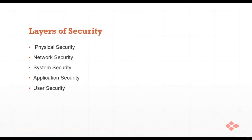The various layers of security are: physical security, network security, system security, application security, and user security. Physical security involves safeguarding hardware, programs, and network peripherals from physical threats. Network security is the protection of networks and their services from unauthorized modification or destruction. System security protects the system and information from unauthorized access, corruption, or misuse.